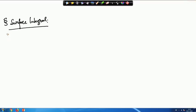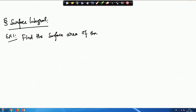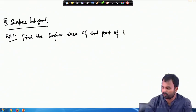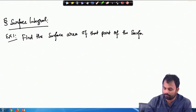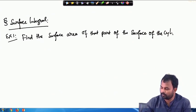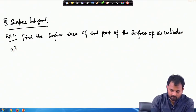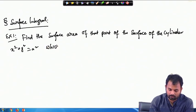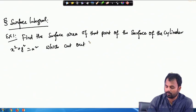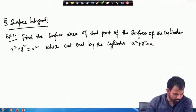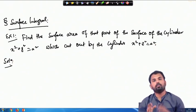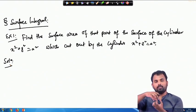Let us start with our first example for today. Example 1: Find the surface area of part of the surface of the cylinder x² + y² = a², which is cut out by the cylinder x² + z² = a². Basically we have to find out the surface area of the first cylinder cut out by the second cylinder. The first cylinder has its base in the xy-plane and the second cylinder has its base in the xz-plane.